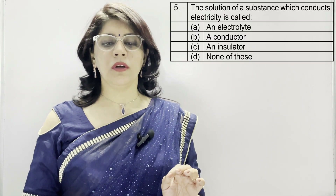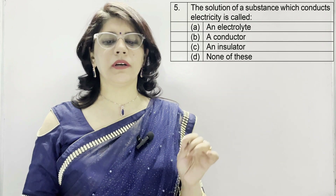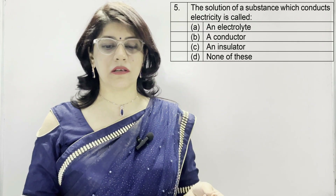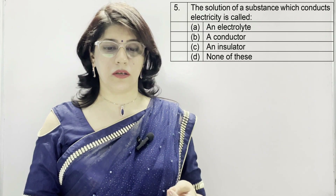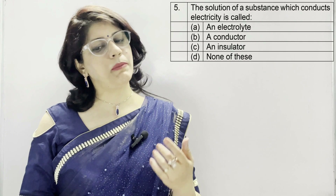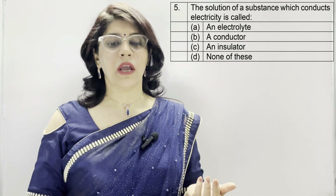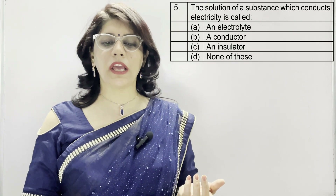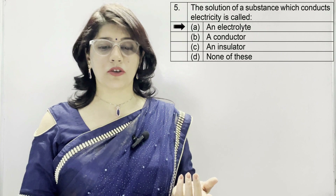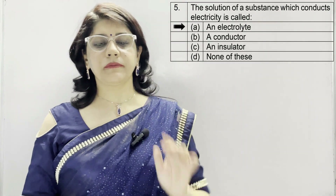Question 5: The solution of a substance which conducts electricity is called — option A: an electrolyte, B: conductor, C: insulator, D: none of these. Option A, which is an electrolyte, is the correct one.